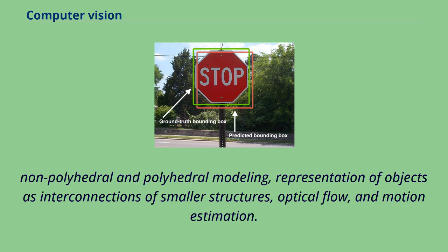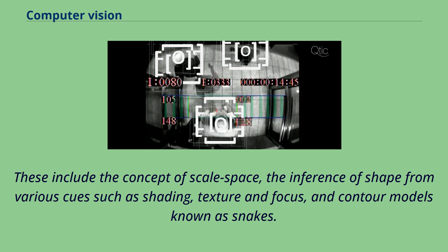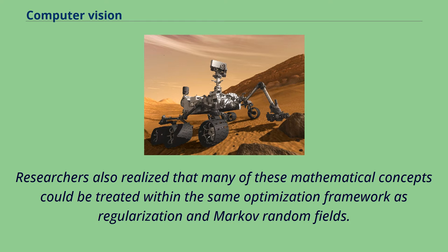The next decade saw studies based on more rigorous mathematical analysis and quantitative aspects of computer vision. These include the concept of scale space, the inference of shape from various cues such as shading, texture and focus, and contour models known as snakes. Researchers also realized that many of these mathematical concepts could be treated within the same optimization framework as regularization and Markov random fields.